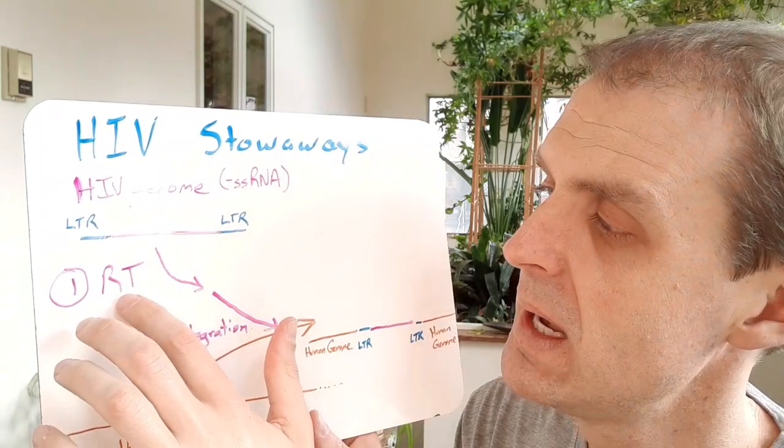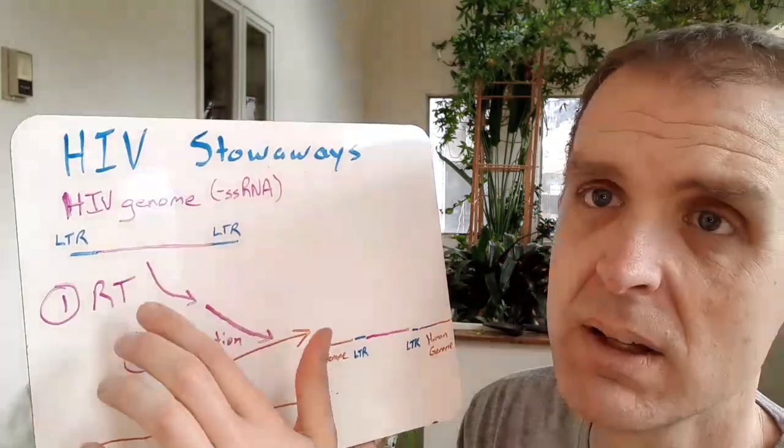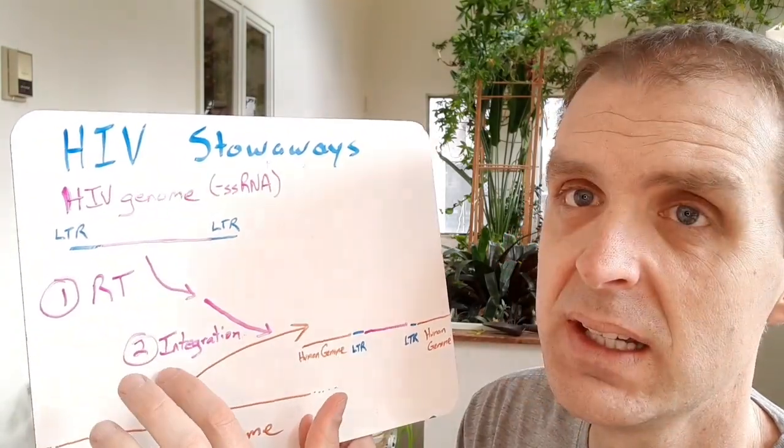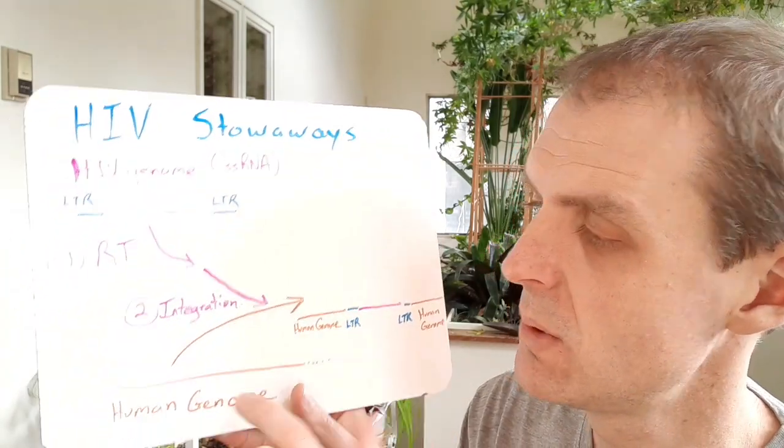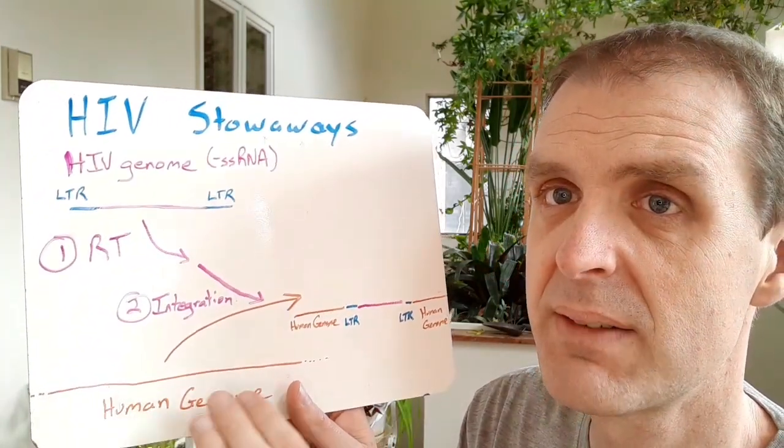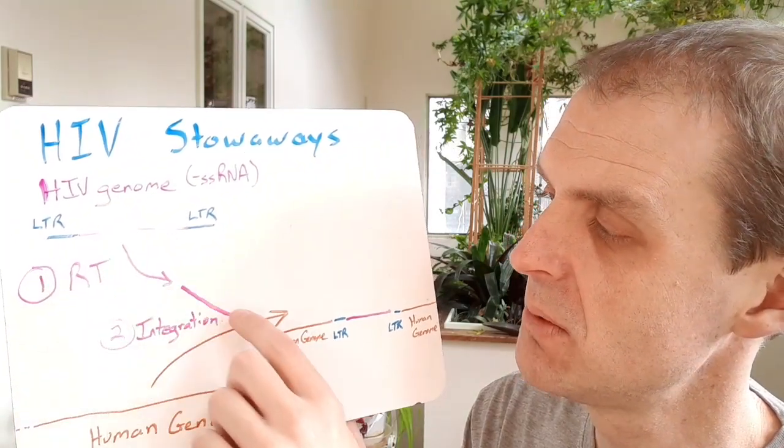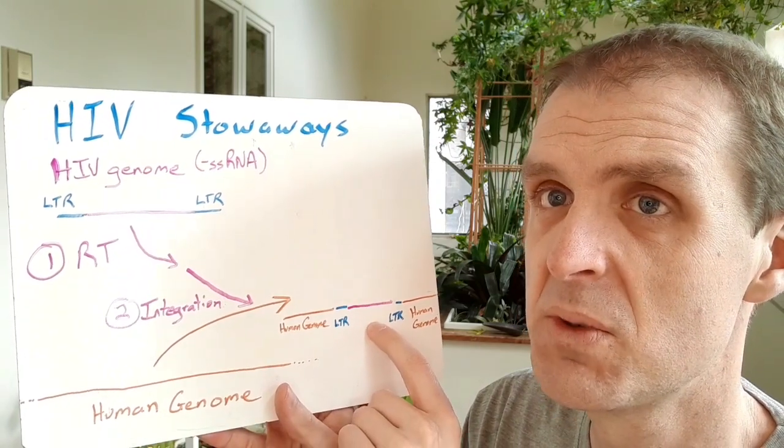If you reverse transcribe this RNA you'll end up with DNA, and then you can integrate that genome into the human genome. Down here I have the human genome and you take this HIV genome and it'll insert itself into the human genome somewhere.